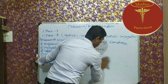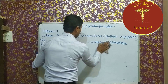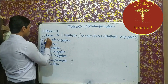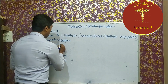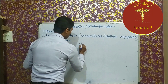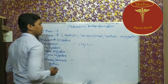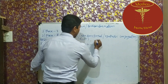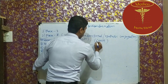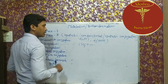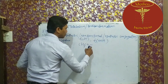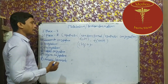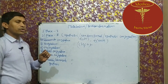After glucuronide conjugation, the next Phase 2 reaction is acetylation. Acetylation means addition of an acetyl group. The acetyl group is CH3CO. The acetylation chemical reaction is carried out by the enzyme acetyl coenzyme A. Drug molecules which have an amino group or hydrazine group undergo acetylation — meaning an acetyl group is added to the drug molecule by the help of acetyl coenzyme A. This process is called acetylation.